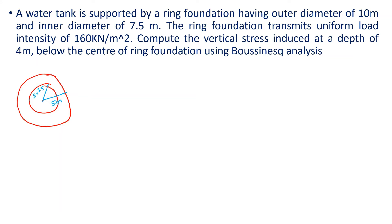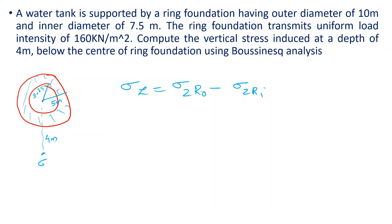We need to find the vertical stress at a depth of 4.5 meters below the center of the ring foundation. We use superposition: the stress in the ring area equals the stress for the total outer circular area minus the stress for the inner circular area.